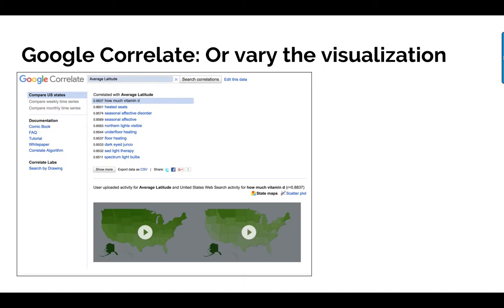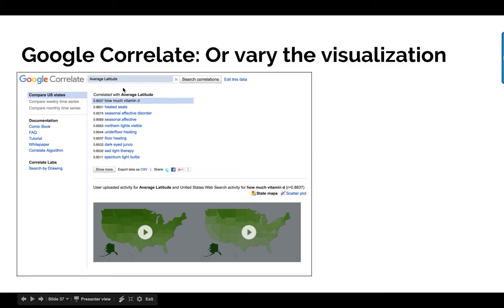You can also map the same data geographically. Looking at average latitude as a query term, you can discover which states have which kinds of queries. The northern states — Washington, Alaska, and others — do queries like 'how much vitamin D,' 'heated seats,' 'seasonal affective disorder.' These are all related to the average latitude query. You can do the same worldwide and start to discover patterns in social behavior through aggregated search terms.